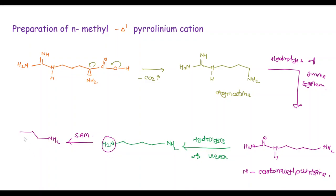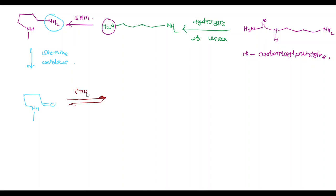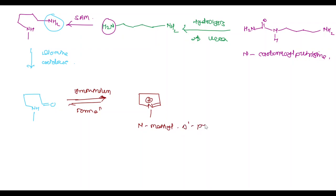In the next step, diamine oxidase converts this group into a carbonyl compound. Then iminium formation takes place and we get N-methyl-Δ'-pyrrolinium cation.